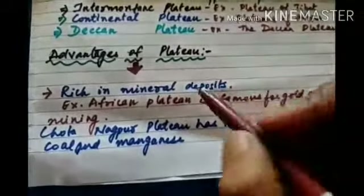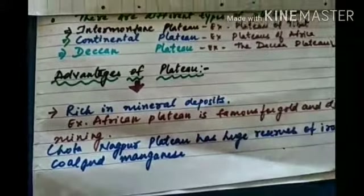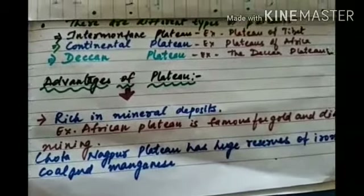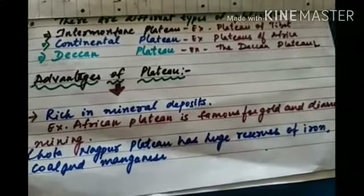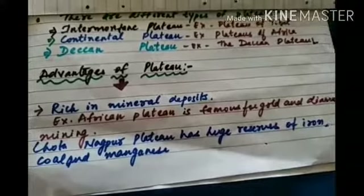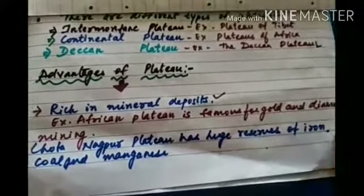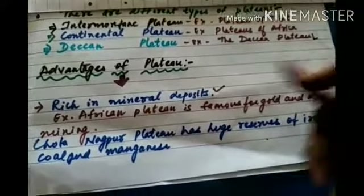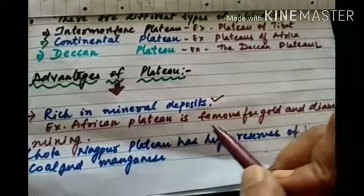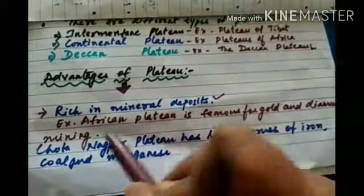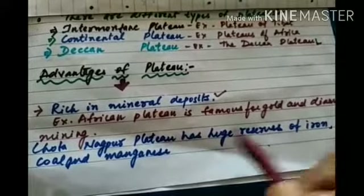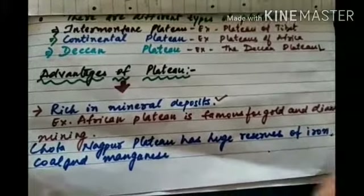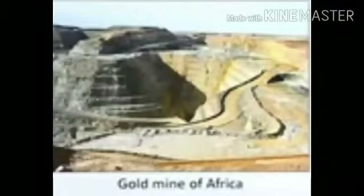Now, what are the advantages of plateaus — the significance of plateaus? Plateaus are rich in mineral deposits. A lot of minerals are found in plateaus. For example, the African plateau is famous for gold and diamond mining. The Chota Nagpur plateau has huge reserves of iron, coal, and manganese. You can see this picture — this is a gold mine of Africa.